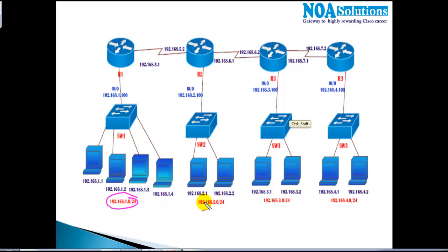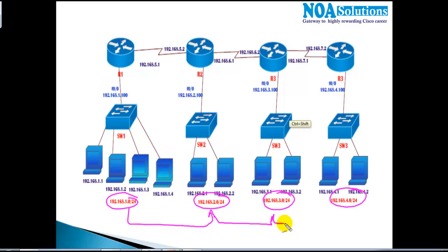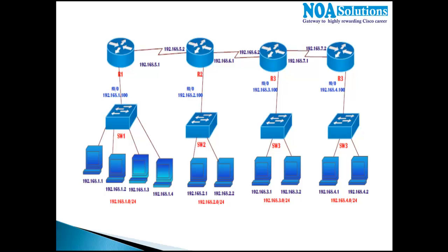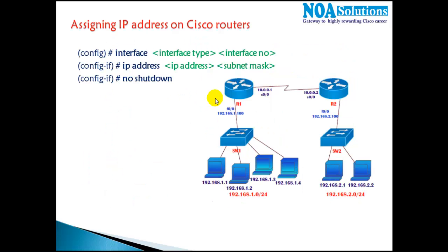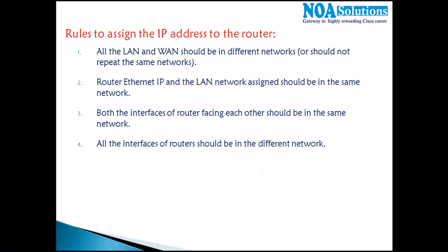All LANs and WANs must be in different networks. For example: 192.168.1.0, 192.168.2.0, 192.168.3.0, and 192.168.4.0 — each assigned to a different location. Once you assign these networks, you cannot repeat or reassign the same network anywhere in your branches. This is a completely private network, so we decide our own IP addressing scheme.